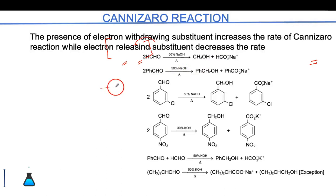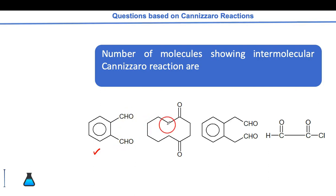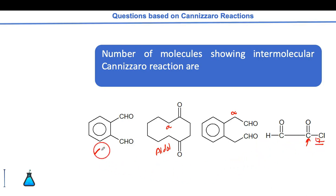In the presence of electron-withdrawing groups, the rate of the Cannizzaro reaction is higher because the partial positive charge on the carbonyl carbon increases. Now let's look at a question: which of these molecules undergoes the Cannizzaro reaction? The first molecule undergoes intramolecular Cannizzaro — OH minus attacks at one carbonyl position and H minus attacks the other. The second molecule undergoes intramolecular aldol because alpha hydrogen is present. The third has a leaving group, so OH minus attack leads to a substitution reaction. The first molecule is the correct answer for intramolecular Cannizzaro.